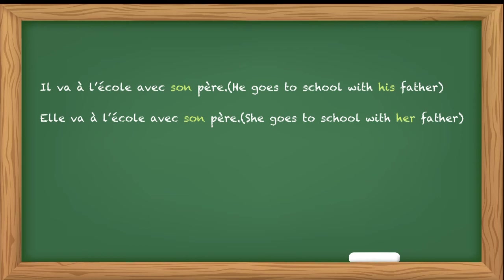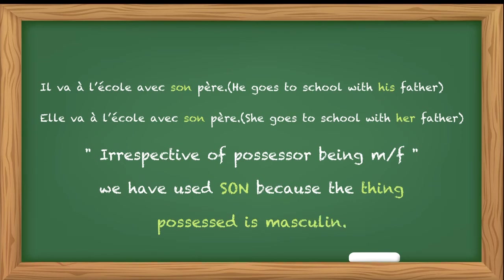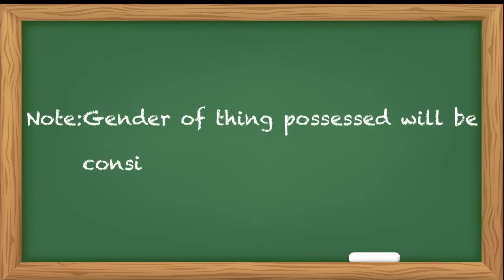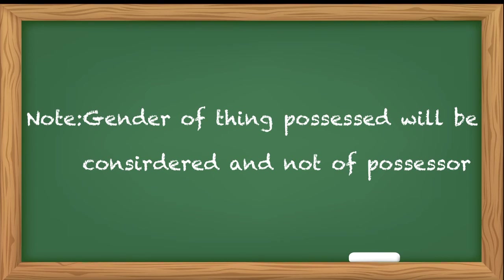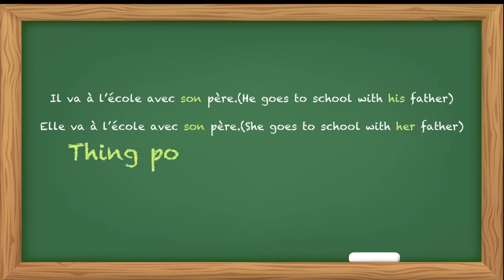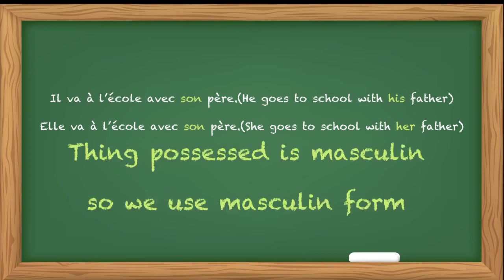Notice that in the last two sentences, we used son père whether the subject was masculine or feminine. That shows irrespective of the possessor being masculine or feminine, we used son because the thing possessed — père — is masculine. So we chose the masculine form of the possessive adjective. The key note here is: the gender of the thing possessed will be considered, not the gender of the possessor.